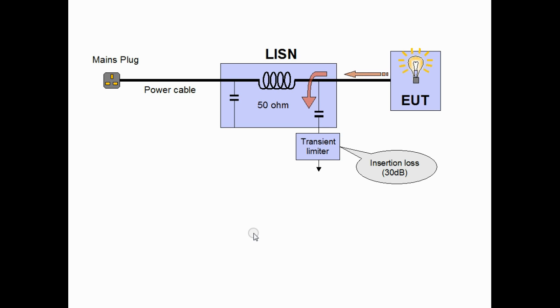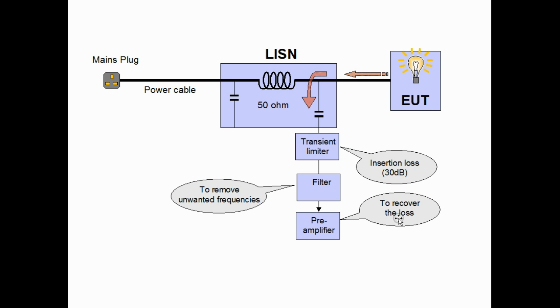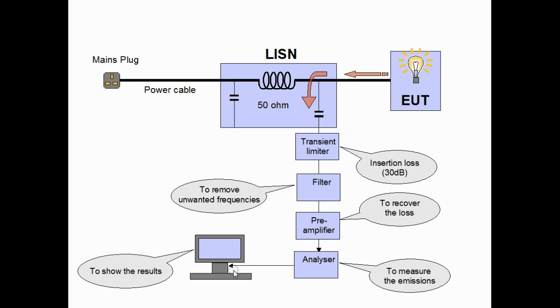To look further down our measurement network, the next stage may be a filter to remove unwanted frequencies then a preamplifier which will recover the loss caused by the transient limiter and then to our analyzer which actually makes measurements. This may be connected to the PC to show results and to control the whole system. Finally, the filter may be replaced by a device called a preselector. We'll talk about that more in a later session.